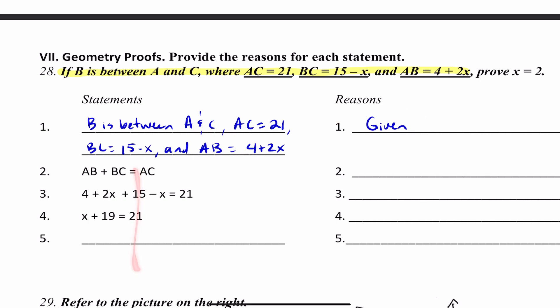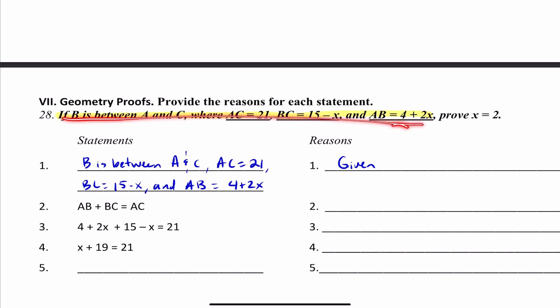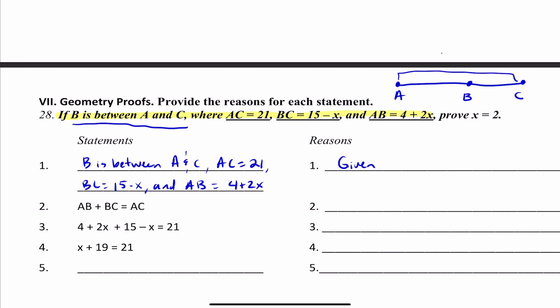Before I look into all this, I want to go ahead and read this again and draw a picture, because that's going to help me understand how this proof is going to go. So I'm going to draw A and C because B is between A and C — my endpoints are A and C. B is between those two points, AC is 21, BC is 15 minus X, and AB is 4 plus 2X.